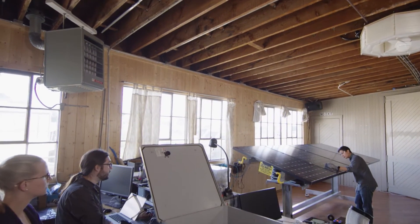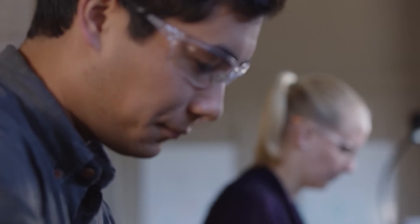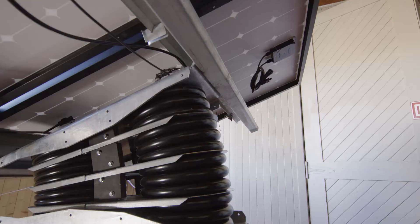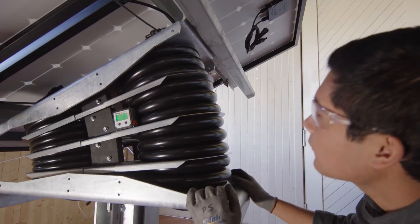At Sunfolding, we're building a new kind of solar tracker. Traditional trackers are built with hundred-year-old machinery. So they're built with motors and gearboxes and torque tubes and bearings, lots and lots of moving parts and lots of wear surfaces. We are replacing the traditional machinery of a solar tracker with polymers and air.